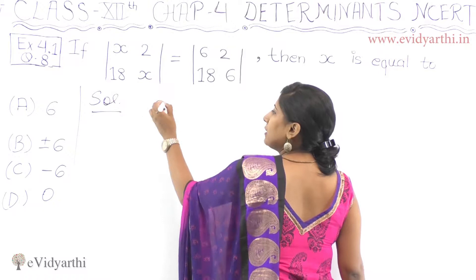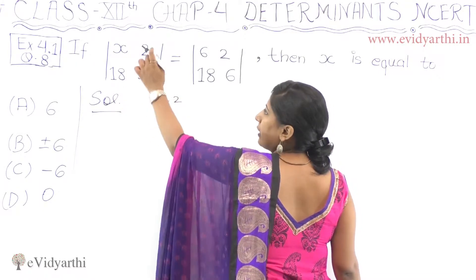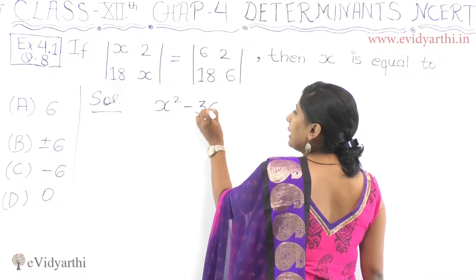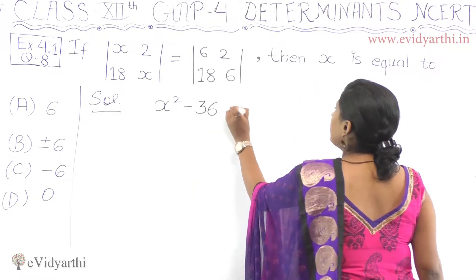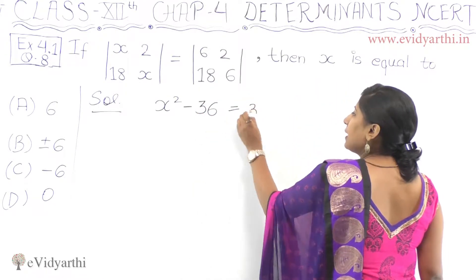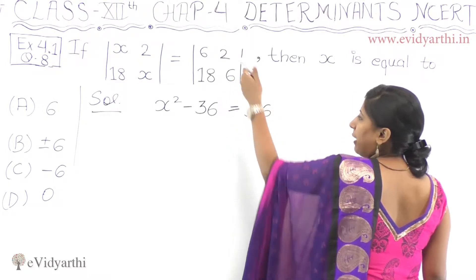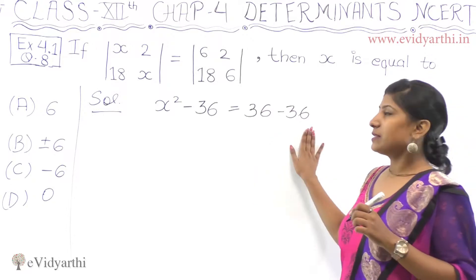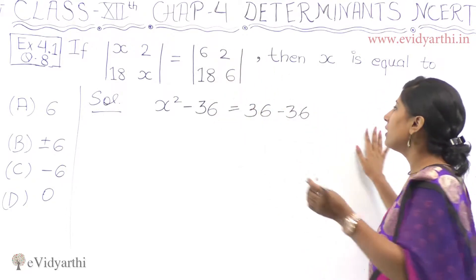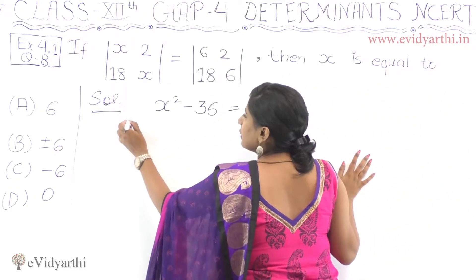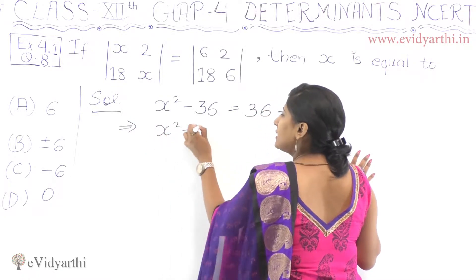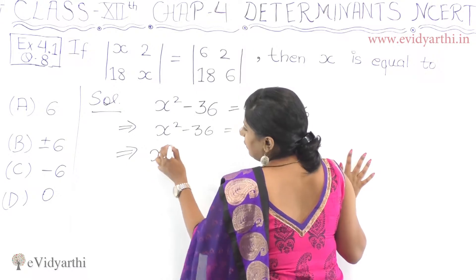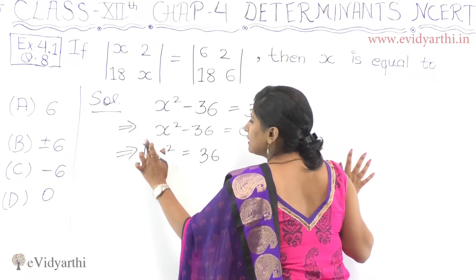What do we do? Diagonal entries multiplied give x squared, minus non-diagonal entries multiplied gives 18 to 36. This equals diagonal entries multiplied — 36 minus 36. That is zero. So x squared minus 36 equals zero, which means x squared equals 36.